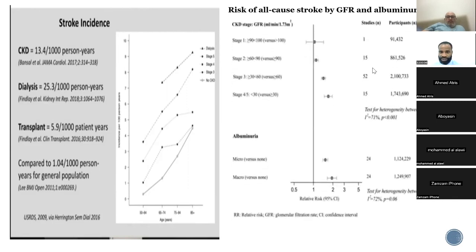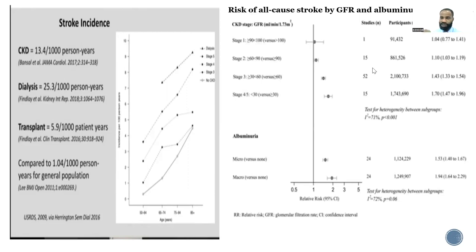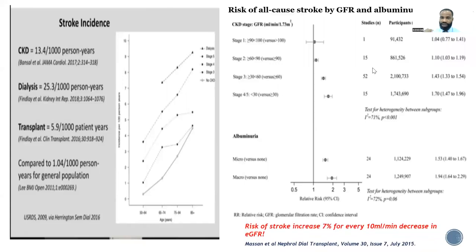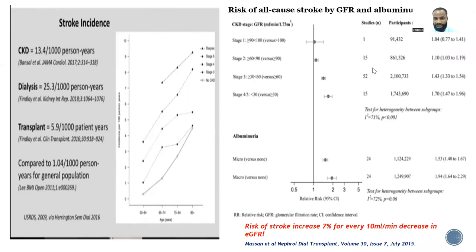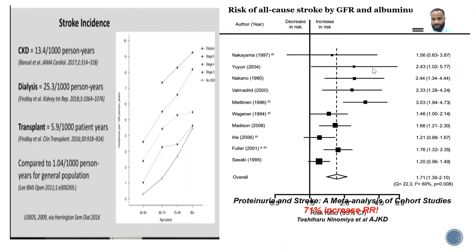The implication is that at every point in time when we see these patients, we need to keep in mind the possible risks associated with this group. A meta-analysis by Masson reported in 2015 looked at stroke risk in CKD patients and concluded there is an increased risk of stroke — increased by about 7% for every 10 mL/min decline in eGFR. Another meta-analysis reported in AJKD showed about 71% increased relative risk with proteinuric patients.